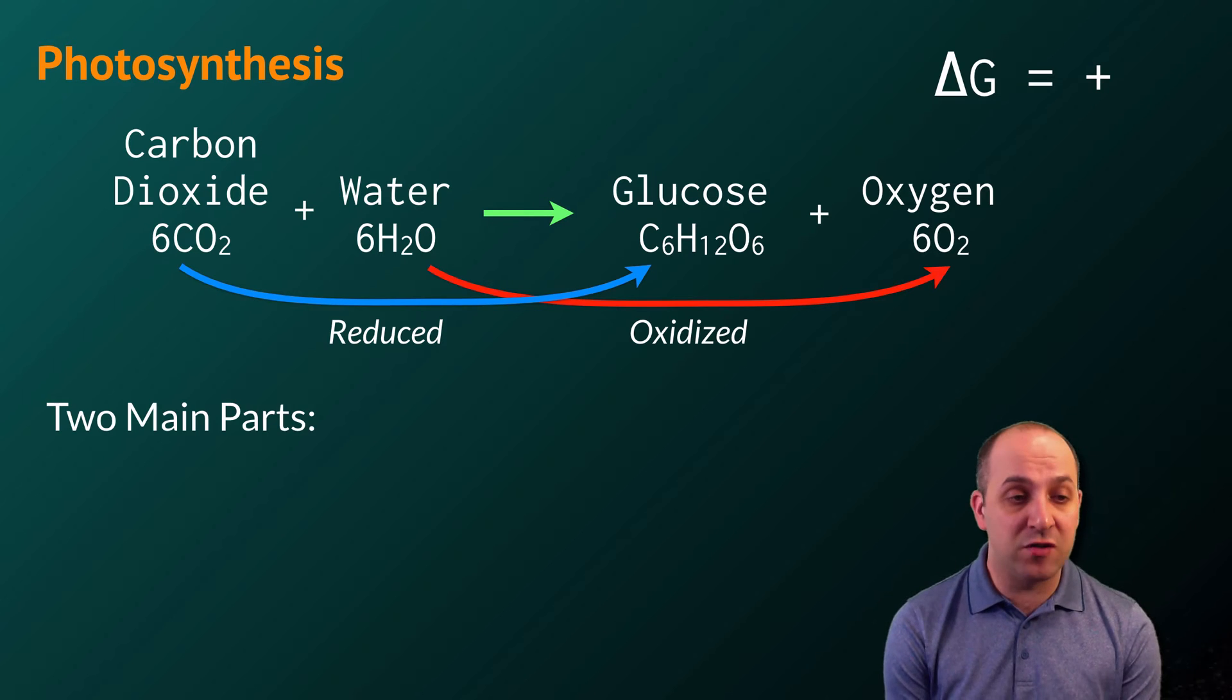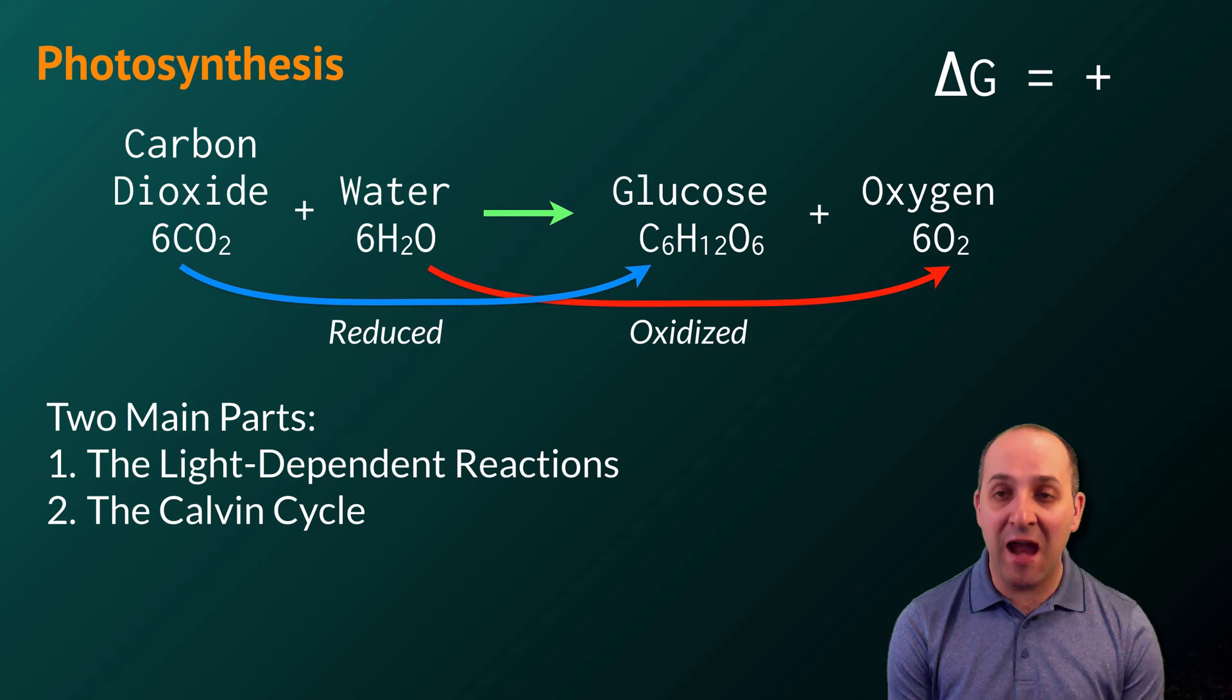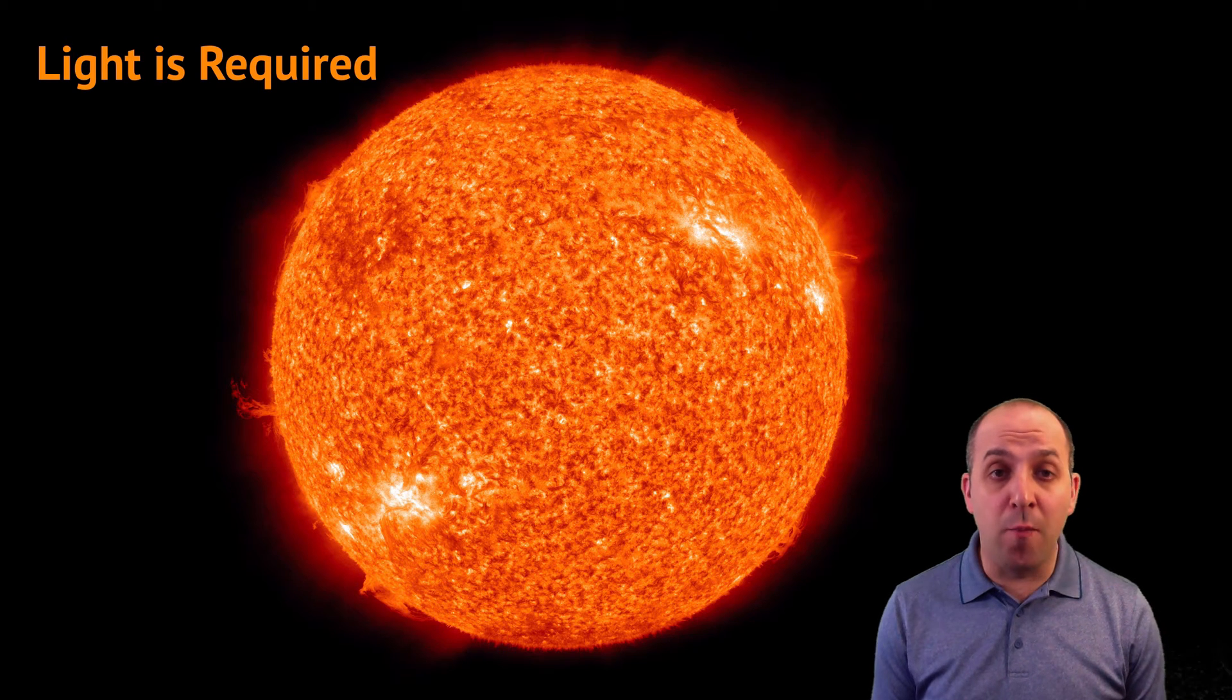There are two main parts to photosynthesis, the light-dependent reactions and the Calvin cycle. Since photosynthesis is an endergonic reaction, we need an input of free energy. That energy comes from light.